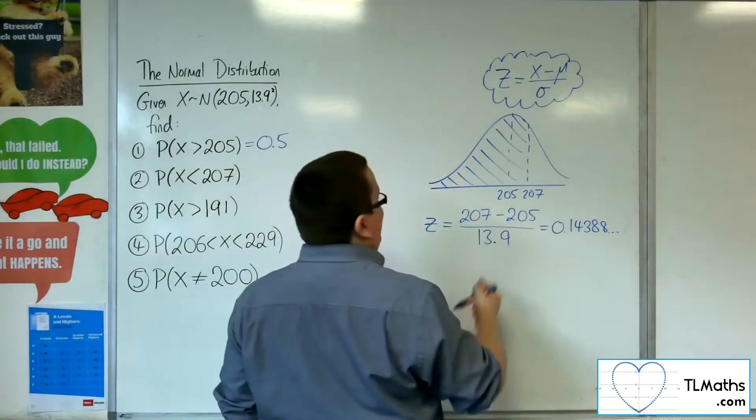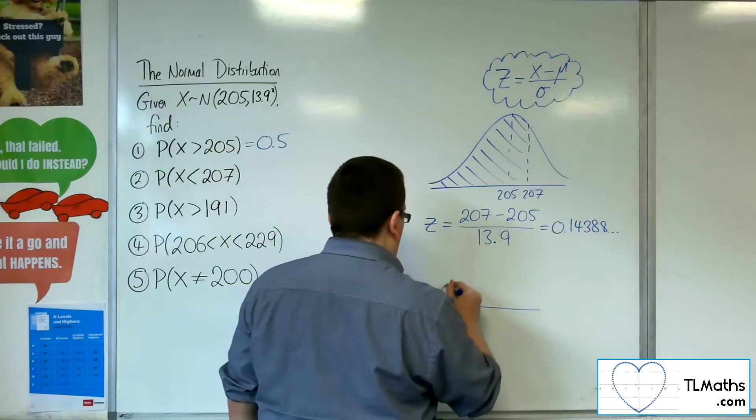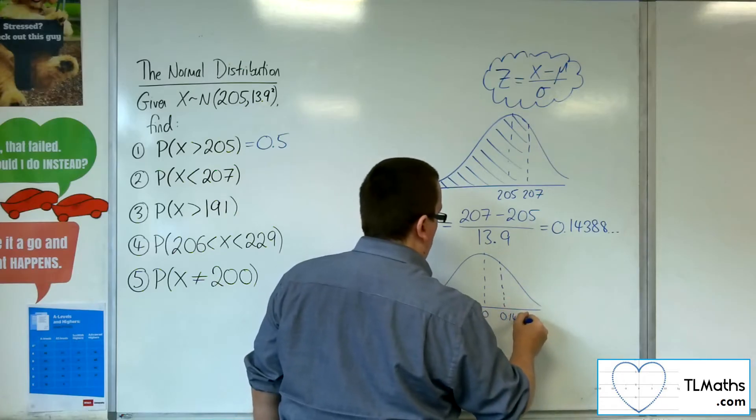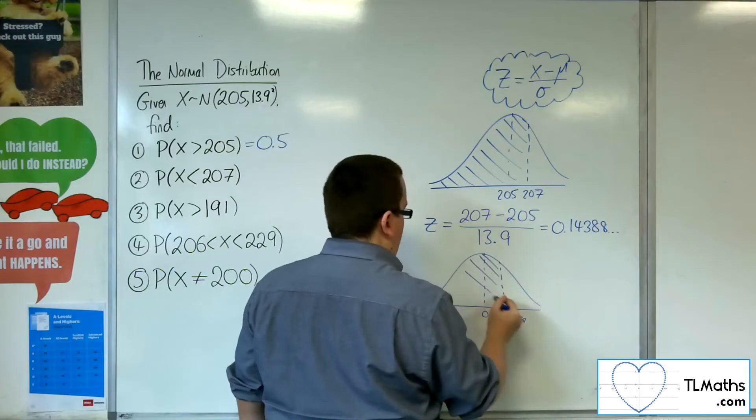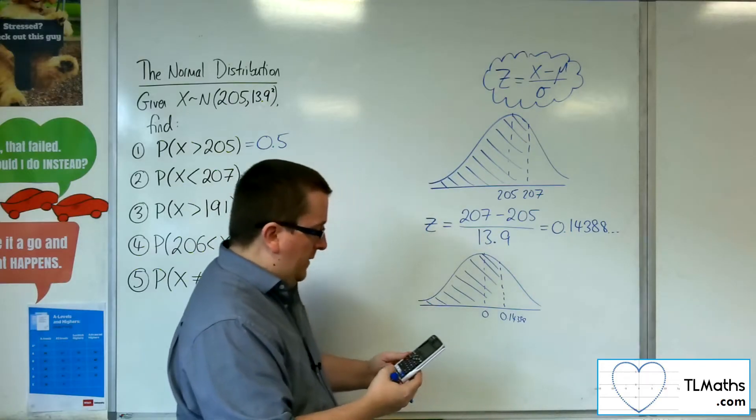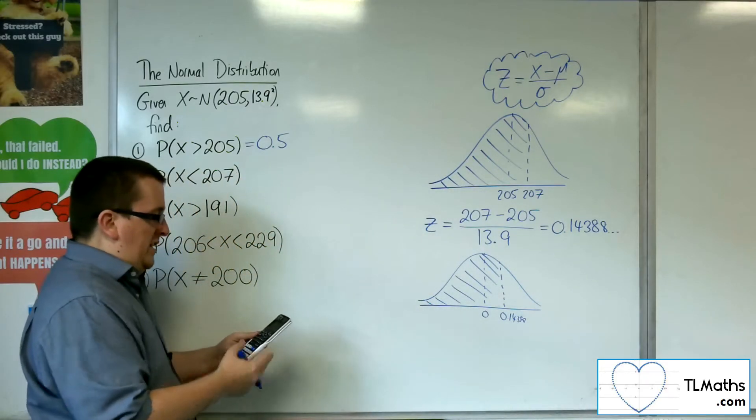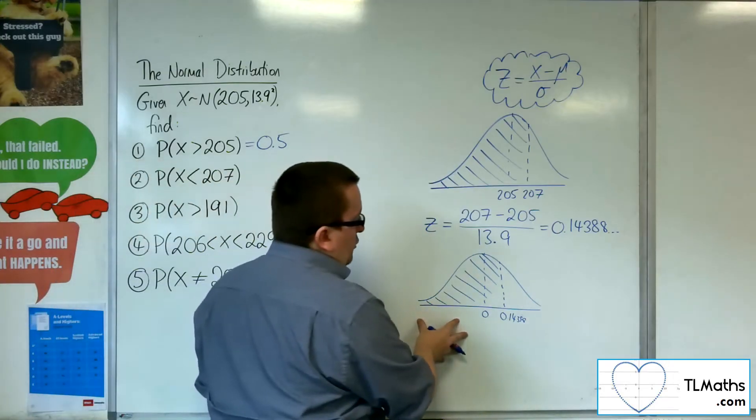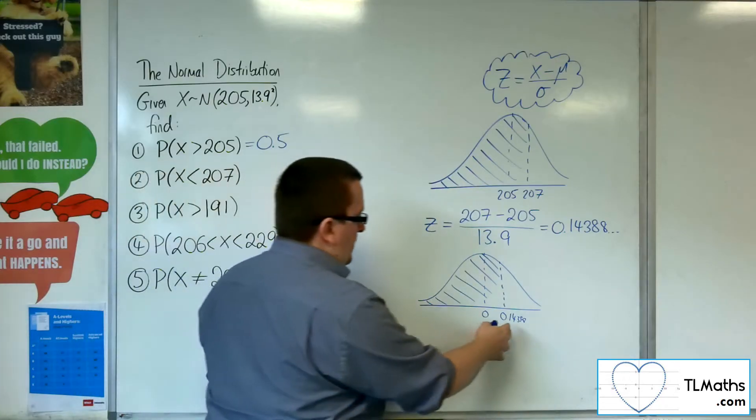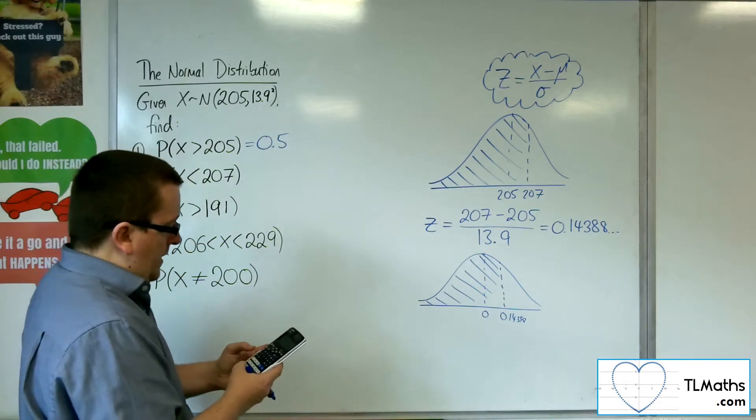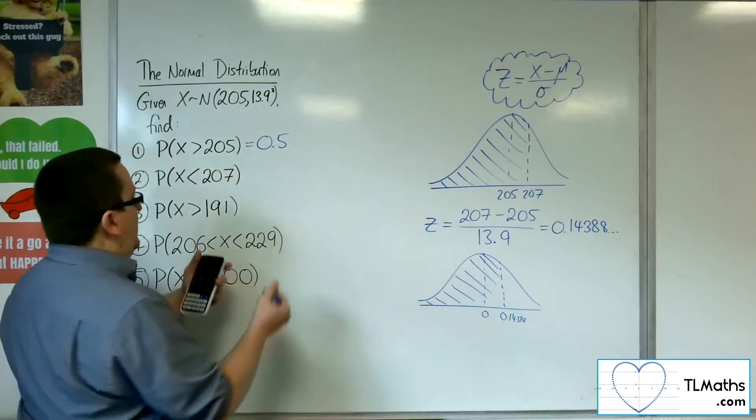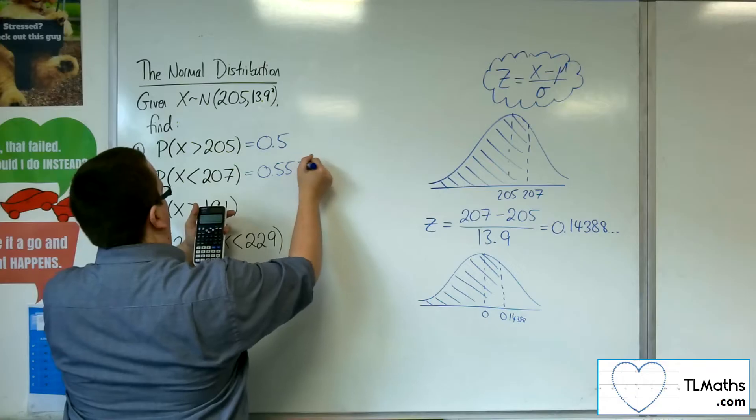So we're looking for the probability that z is less than that figure. On our standard normal distribution curve, there is 0 and there is my 0.14388, and I want to find that area. So on my calculator, we go to menu, then number 7, and then we want to go to normal CD, number 2. If we're looking at the standard normal, my lower figure is going to be minus 10, my upper figure is going to be the 0.14388, sigma is 1, and the mean is 0. And we get 0.5572.